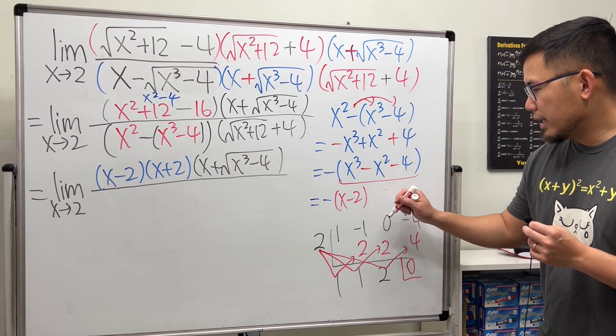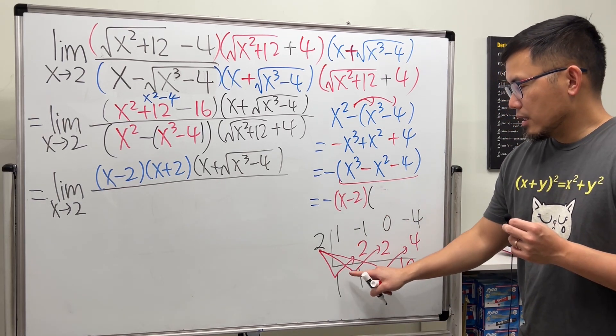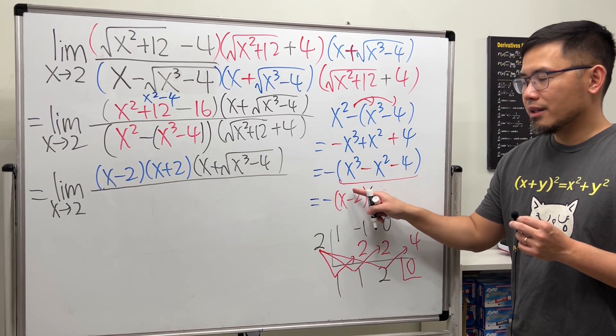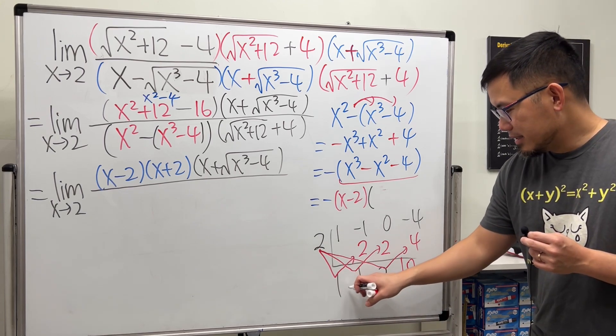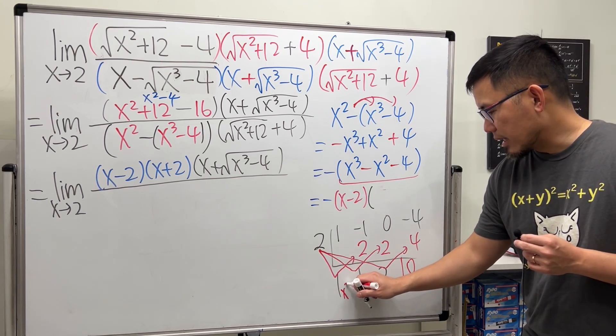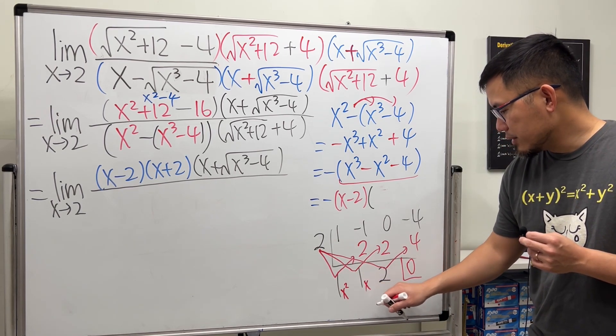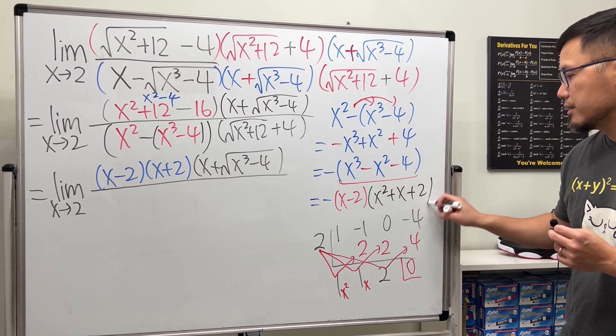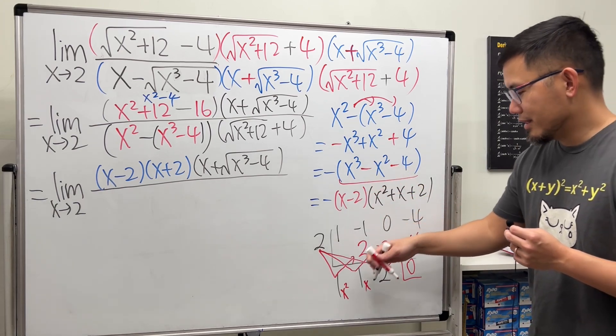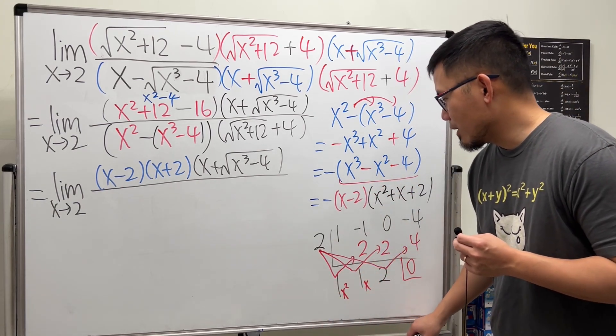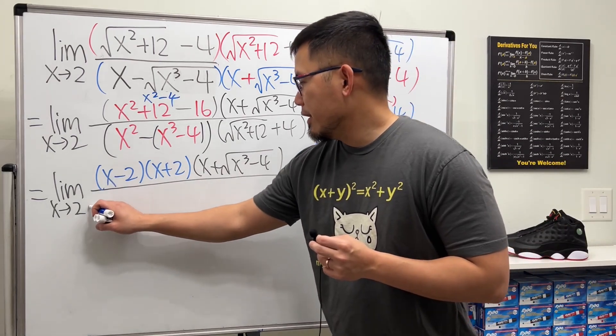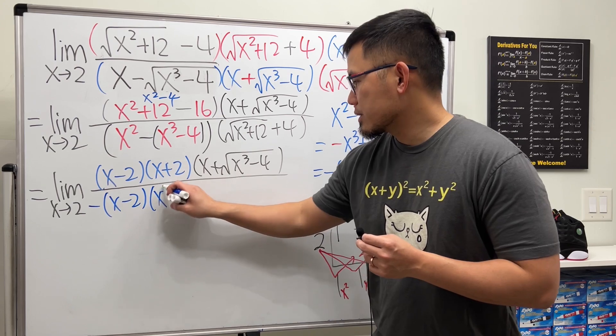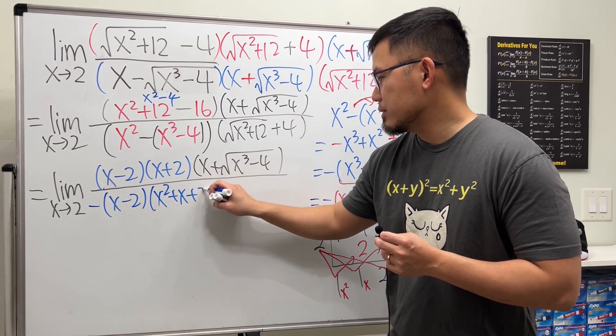This means we can have our next factor. The power goes down by 1, because this is x to the first power. This right here will be x to the second power. These are the coefficients. 1x squared, 1x to the first, and no x. So we have x squared plus x plus 2. Now we can go back here, and then let me just write down what we have. So negative parentheses x minus 2, and then we have all that. So x squared plus x plus 2.